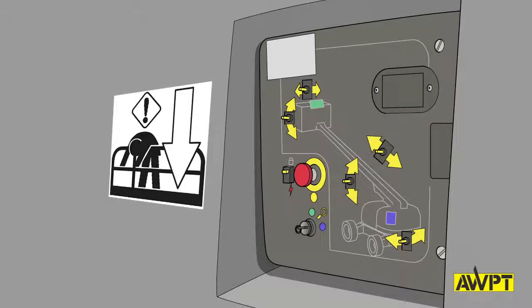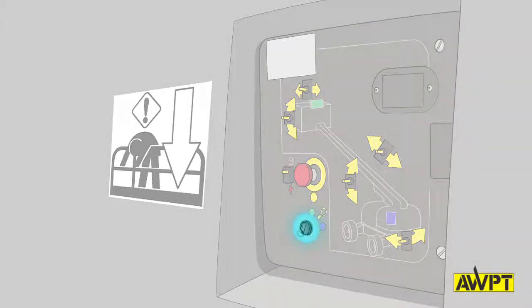Then stop the engine, pull the emergency stop out, and turn the key to the platform control before proceeding to the platform control function test.